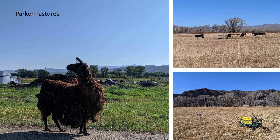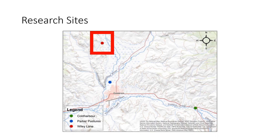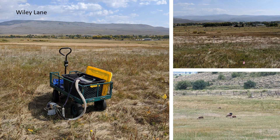Irrigation at Parker Pastures was implemented for the months of June and July. The last site, Wiley Lane, is also a privately owned ranch that has grazing by cows and pigs, and it received minimal irrigation in the months of June and July.